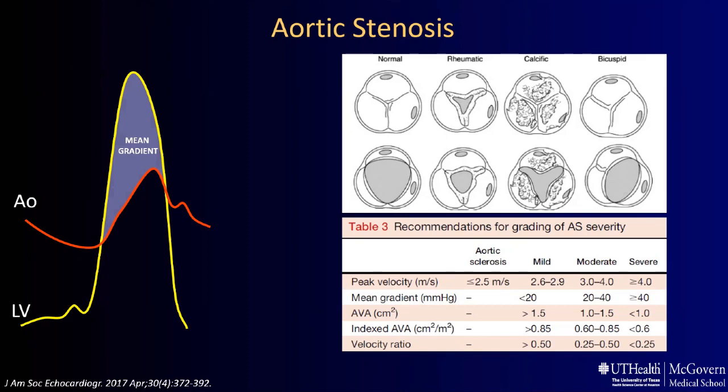The most common etiology of aortic stenosis is calcific, but other etiologies may include rheumatic or bicuspid aortic valve. The criteria for grading AS severity per ASE guidelines are shown on screen. Severe aortic stenosis is defined as a peak velocity of 4 m/s, a mean gradient of 40 mmHg, and an aortic valve area of less than 1 cm², which in certain situations can be indexed for body surface area to less than 0.6 cm²/m².